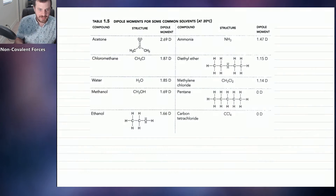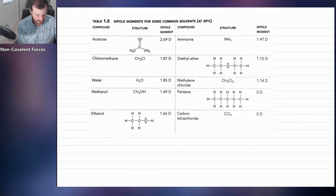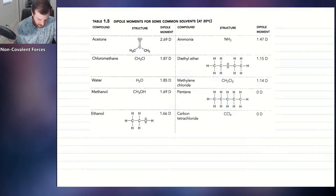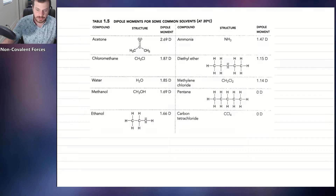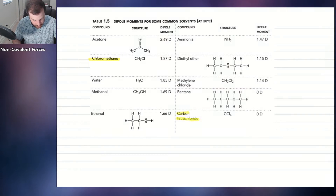A table of common organic solvents and their associated dipole moments shows: the greater the dipole moment, the more polar the solvent. Acetone is an extremely polar solvent with a dipole moment of 2.69, whereas carbon tetrachloride has a dipole moment of 0 and is considered totally nonpolar. Let's look at chloromethane and carbon tetrachloride, which are similar molecules but with very different dipole moments.